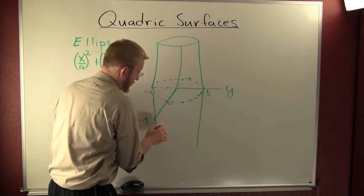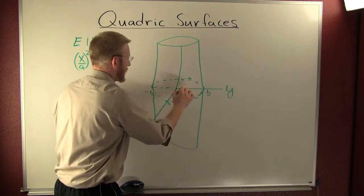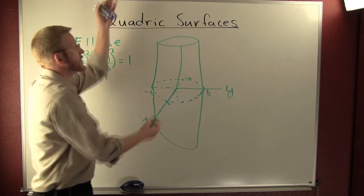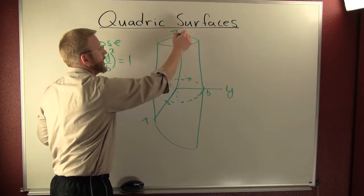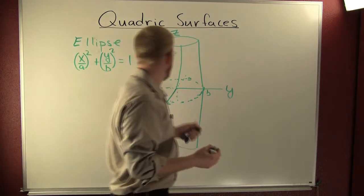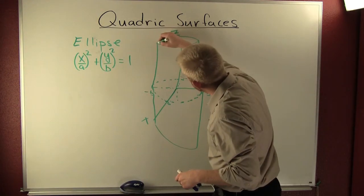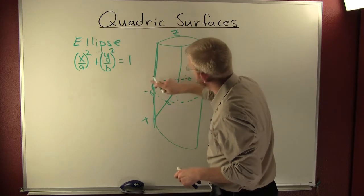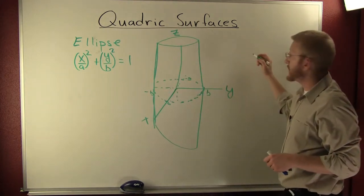A three-dimensional cylinder, where x is coming out the board, z is going up, and y is your horizontal. This is an elliptical cylinder.